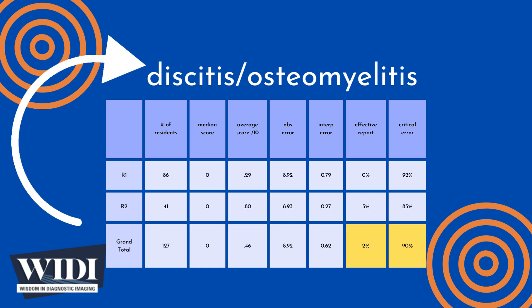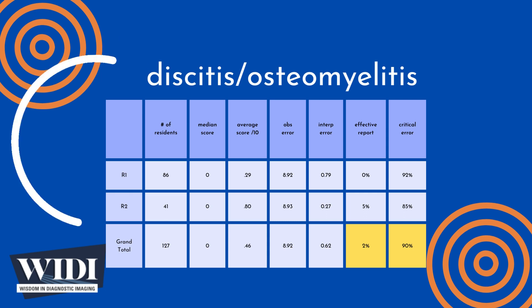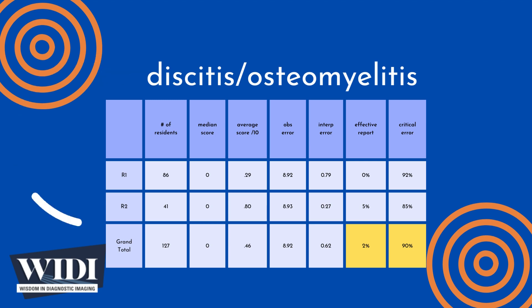We defined a report having a critical error to be one with scores between 0 and 2 — in terms of letter grades, an F or a D. In this most missed case, 90% of residents produced reports with critical errors.